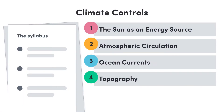Hi there and welcome back to Atomy Geography. This lesson is the second part of our two-part series on the global climate. Last time we introduced climate and the characteristics of different climate zones. This time we're taking a look at the factors that affect and control the global climate. First we'll have a look at the sun as the main energy source driving climate factors, and then we'll tackle the factors themselves: atmospheric circulation, ocean currents, and topography.